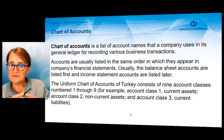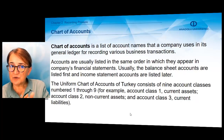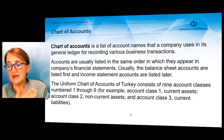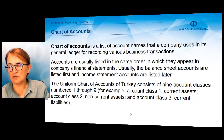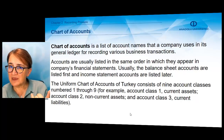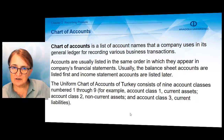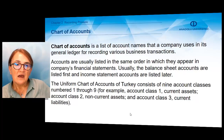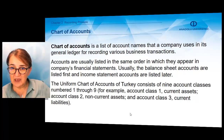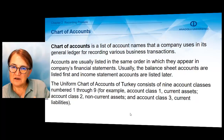At the beginning, companies must decide which account titles will be used. Therefore, they have to prepare a chart of accounts — a list of the accounts. After deciding the name of the accounts, they have to continue to use the same account titles. Chart of accounts is a list of account names that a company uses in its general ledger for recording transactions. Accounts are usually listed in the same order as they appear in financial statements, like balance sheet accounts and income statement accounts.